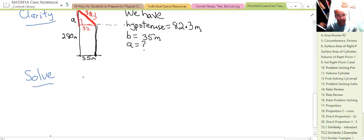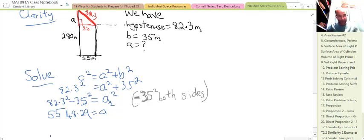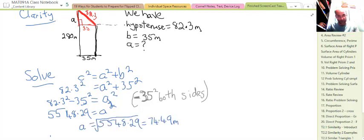We always write Pythagoras's theorem down as our first step: c² equals a² plus b². We substitute the values in, so we have 82.3² equals a² plus 35². Since this is a shorter side question, we know we're going to use subtraction. We've got a² plus 35² equals 82.3². We want to get a² by itself, so we need to subtract 35² from both sides. So a² equals 5548.29.